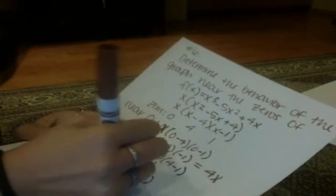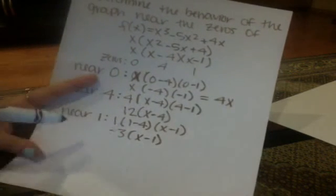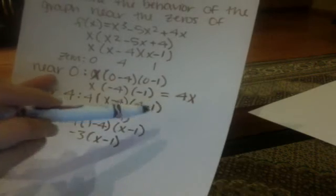And then to find the behavior of those, you look at the powers for each one. Since 4x is to the first power, that means it's a line going through the graph. So that's going through.